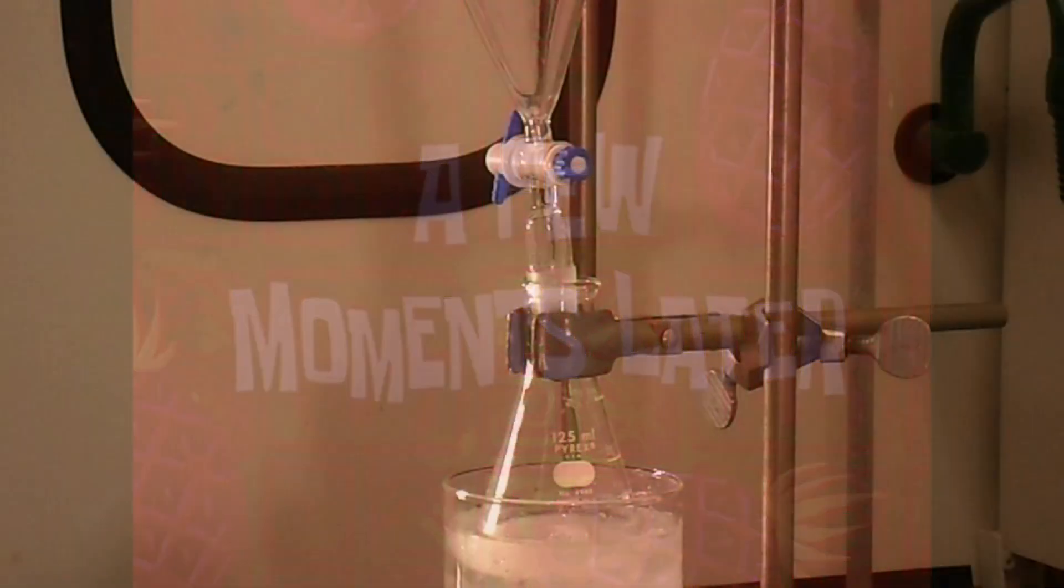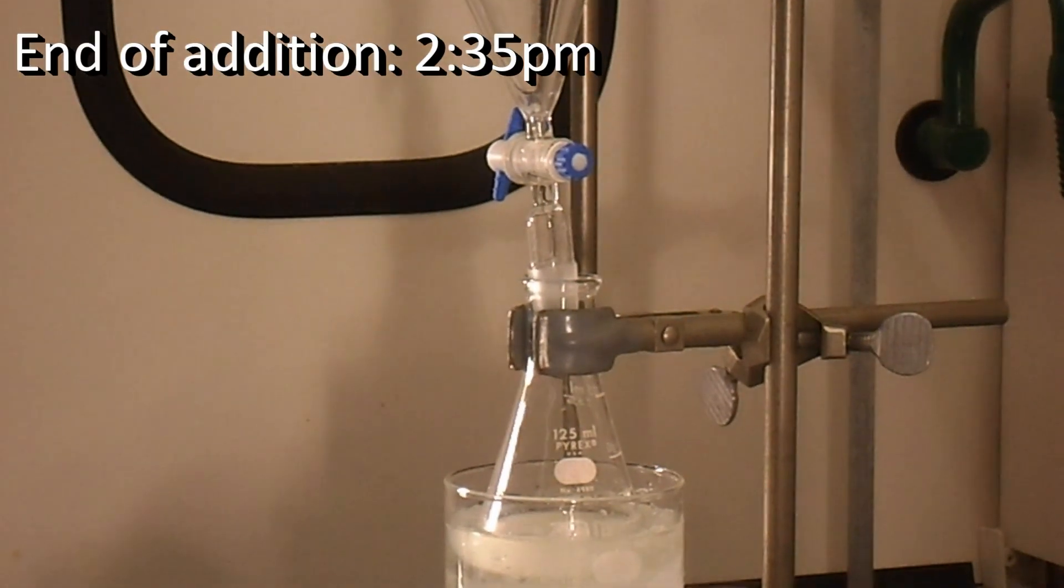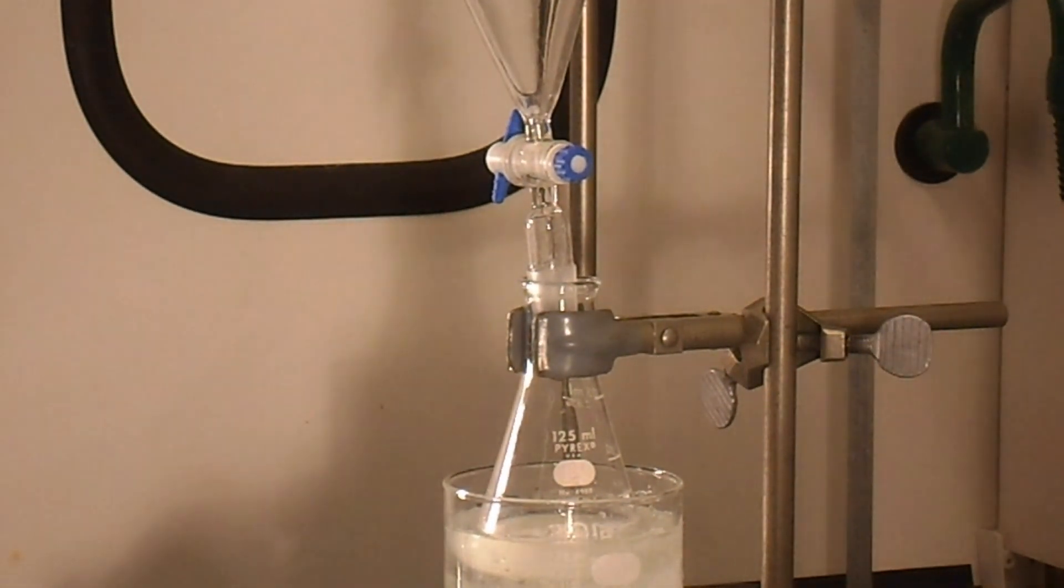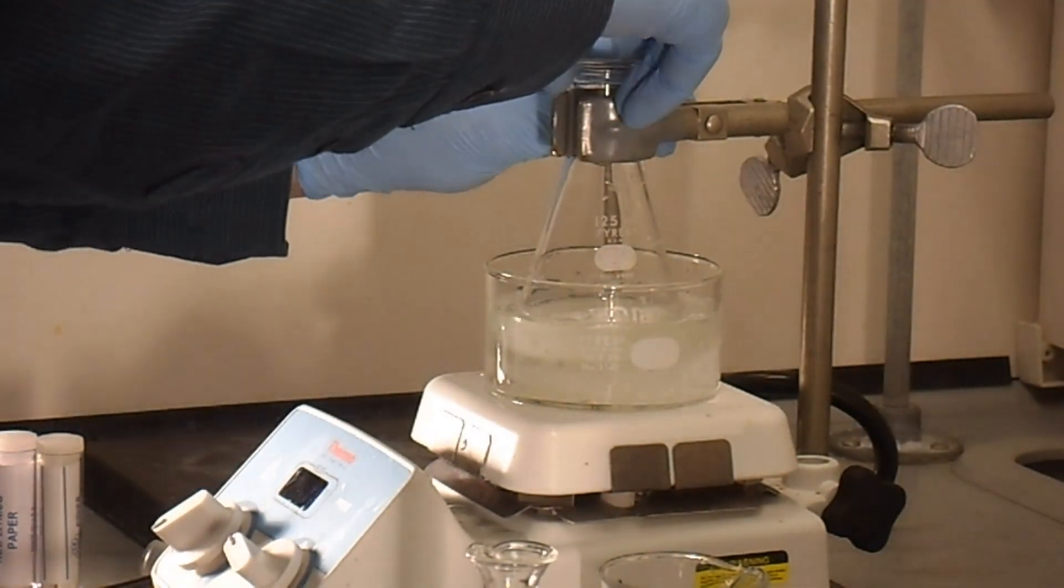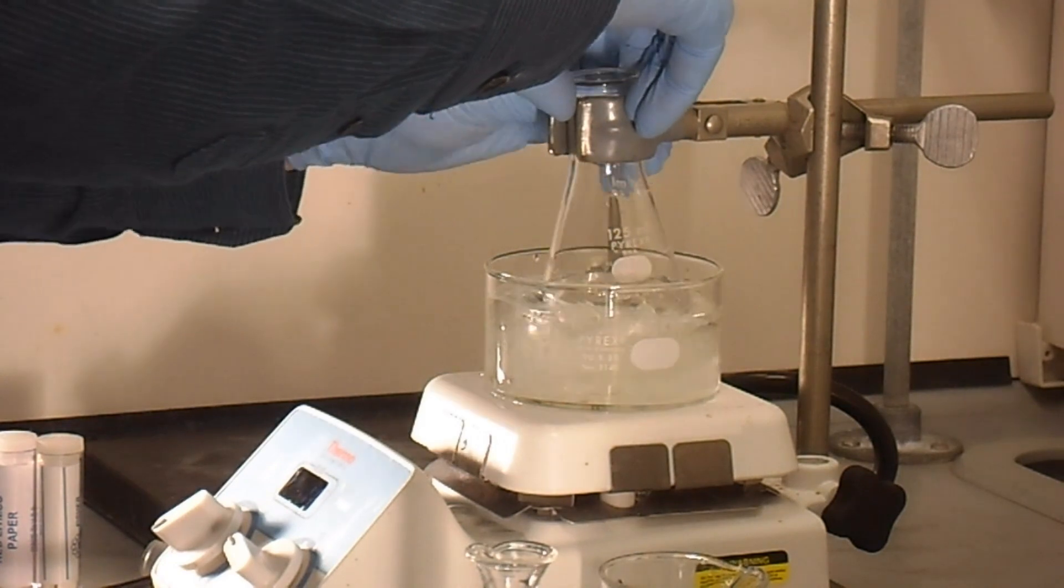So it's actually been about five minutes. As you can see, there is no more bleach in our separatory funnel. So now we will remove the Erlenmeyer flask from the ice bath. And as you can see here, once the water bath has been removed, the solution has become very cloudy and white.